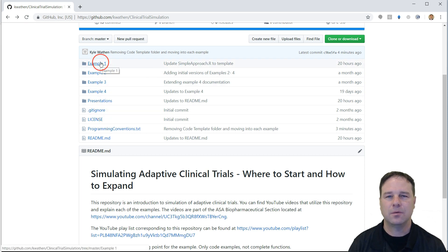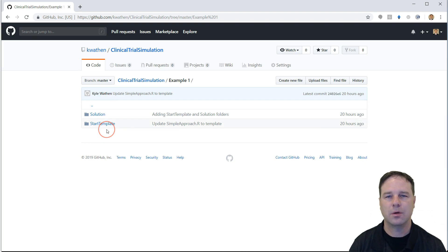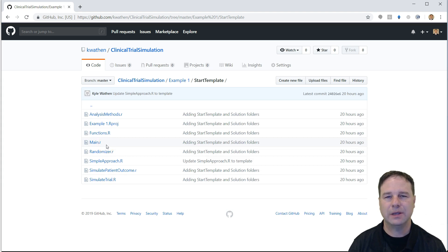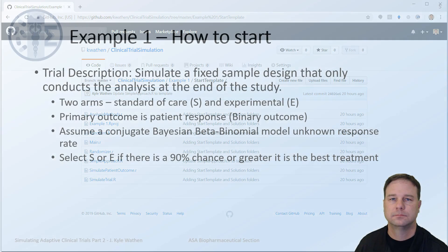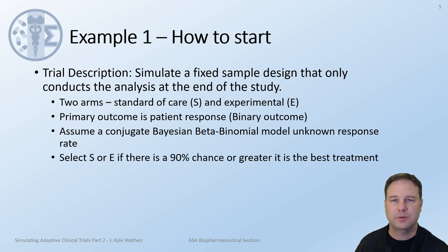In the remainder of this video we're going to be focused on example one. We'll start in the start template folder and look at the code, beginning to put the building blocks together for the fully adaptive trial. As a reminder, in this example we are going to simulate a fixed sample clinical trial, meaning the analysis will only be conducted at the end of the study. We will assume two treatments: standard of care S and the experimental arm E. We will assume a Bayesian beta-binomial model for calculating the probability that one treatment is better than the other, and will select the treatment if there is greater than a 90% chance that it is better.